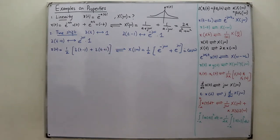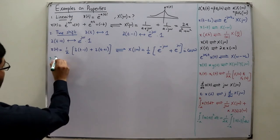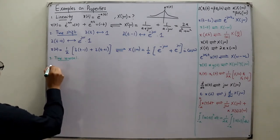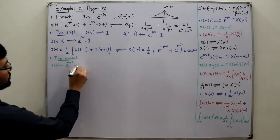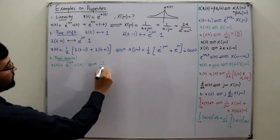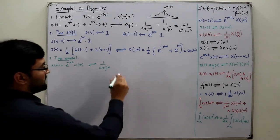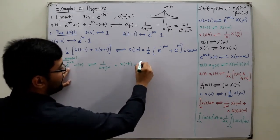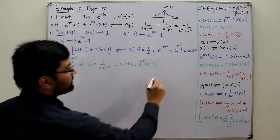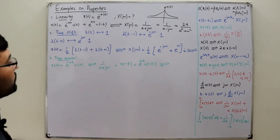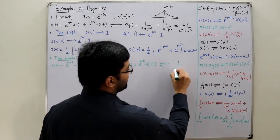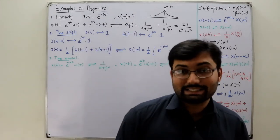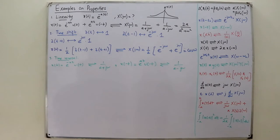The third property is time reversal. If x(t) = e^(-at)u(t), we know the Fourier transform is 1/(a + jω). If we time-reverse it, x(-t) = e^(+at)u(-t). In the original Fourier transform, we substitute ω → -ω, giving a new Fourier transform of 1/(a - jω). This satisfies the time reversal property, as we already proved in the video on complex exponential signals.